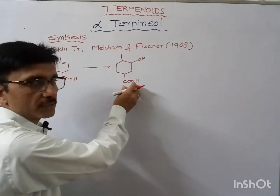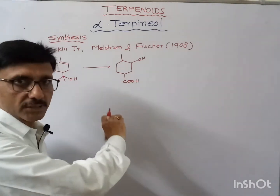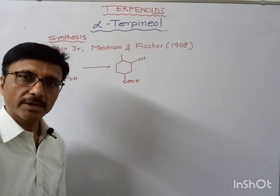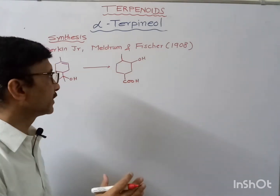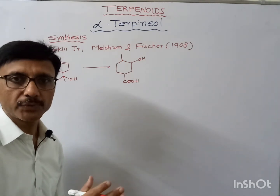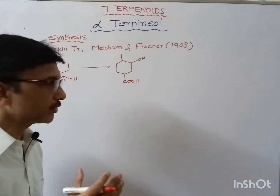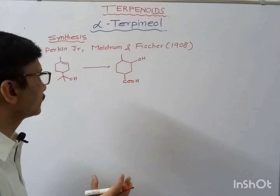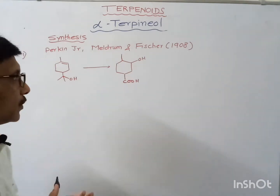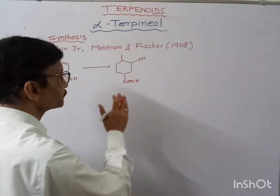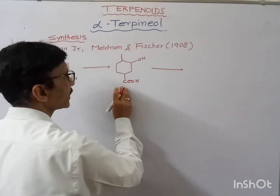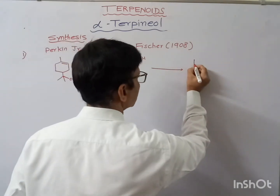This tertiary alcohol can be obtained if we convert the COOH group into an ester, and then the ester in the presence of methyl magnesium bromide would be converted into a ketone, and finally the ketone would be converted into the tertiary alcohol.